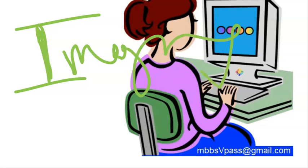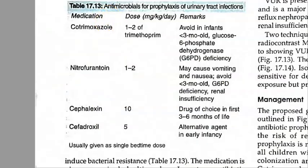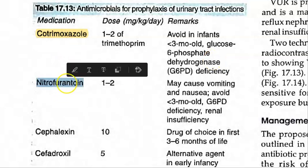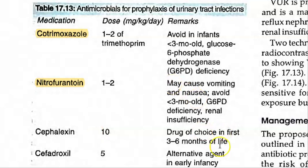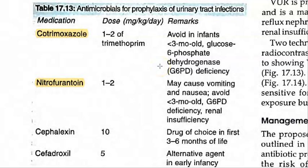What are they doing? They're talking about Cotrimoxazole, which is Trimethoprim. They're also giving Nitrofurantoin and talking about Cephalexin. This is the drug of choice in three to six months of life. If the baby has the first episode of UTI and they're doing imaging, they want to give this prophylaxis so they can stop the UTI from coming again.